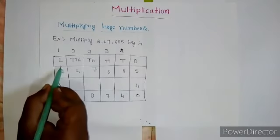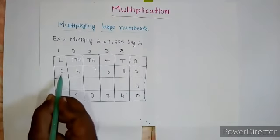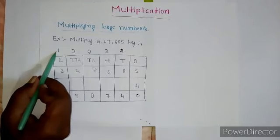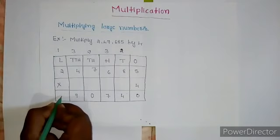Now I move on to the lakhs place. 4 twos are how much? 8. 8 plus 1 carry here, how much? 9.